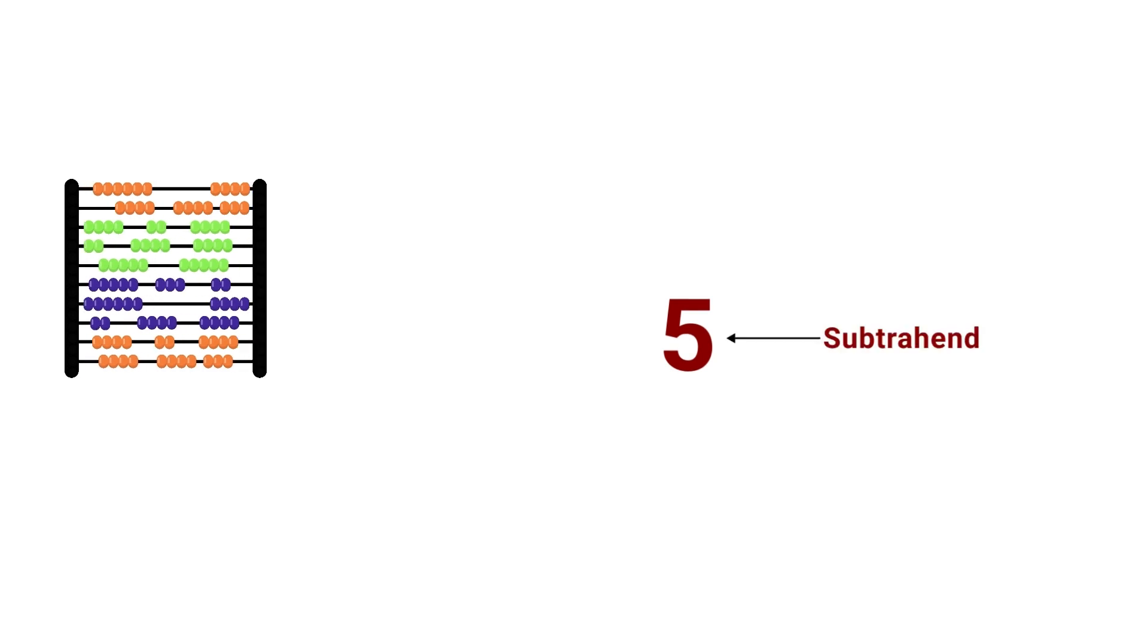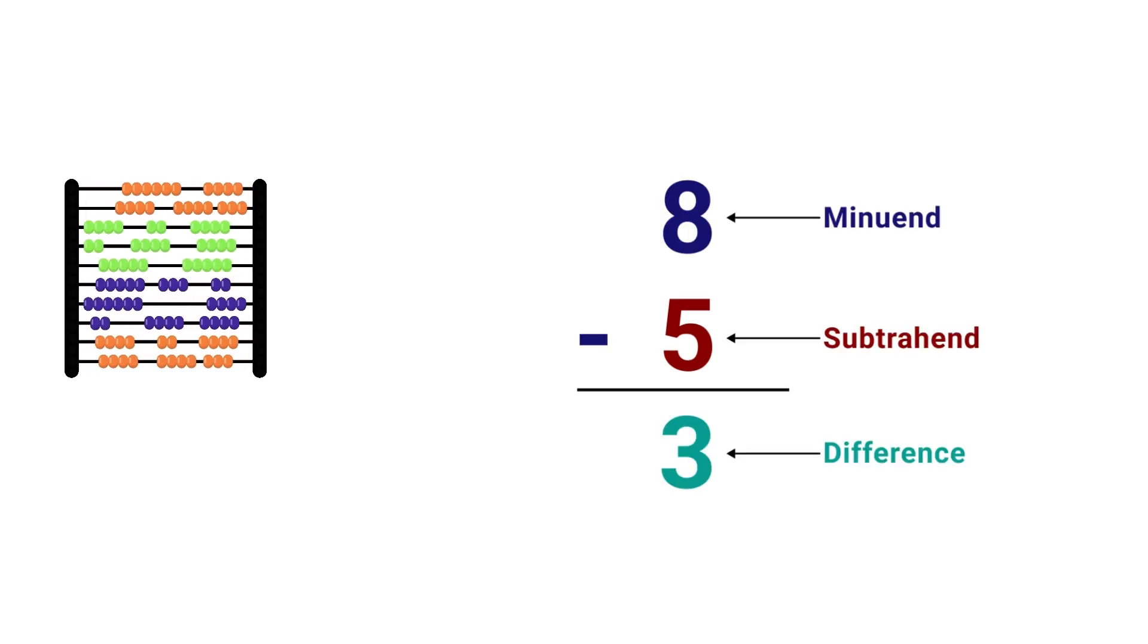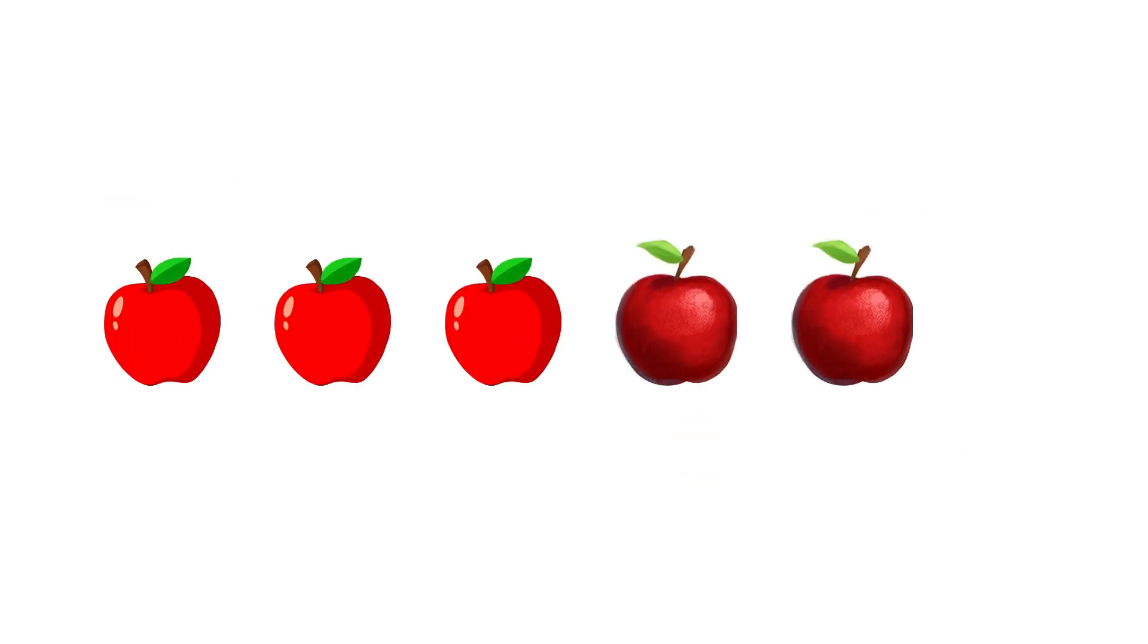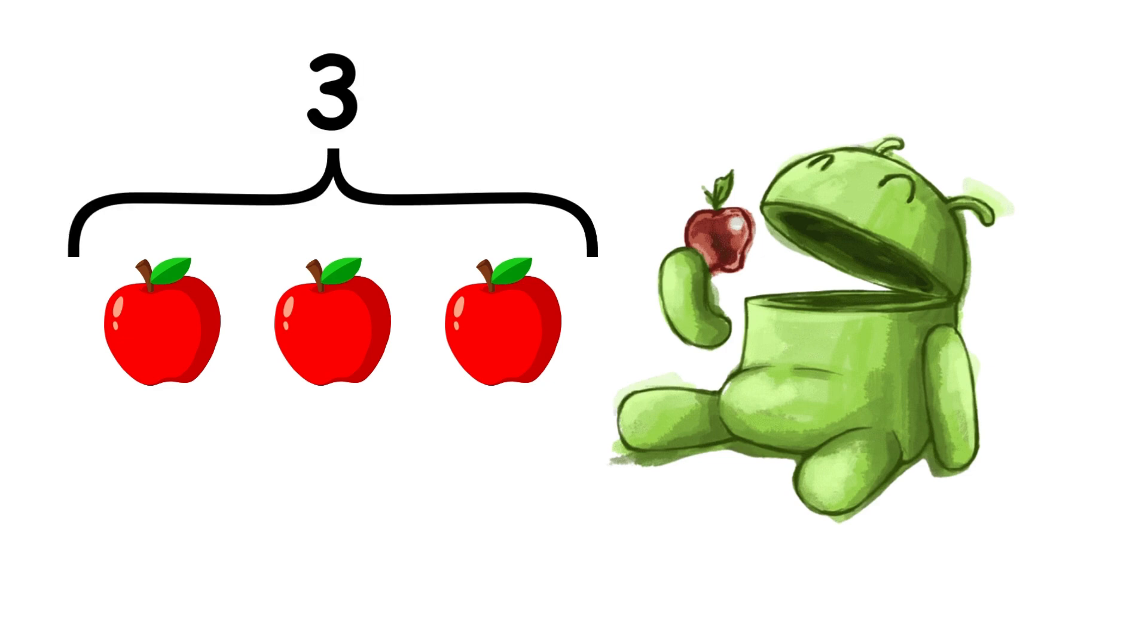Subtraction. Subtraction is an arithmetic operation involving taking one quantity, the subtrahend, from another, the minuend. The result is called the difference between the two quantities. For example, if you have five apples and you take away two apples, you are left with three apples. Five minus two is three.